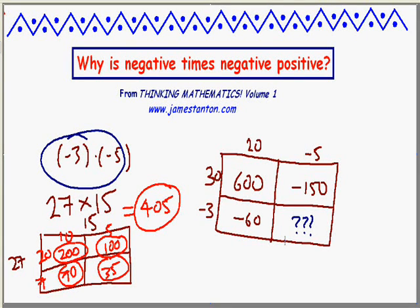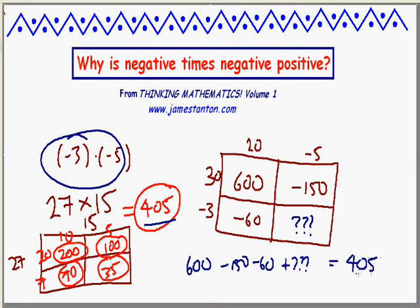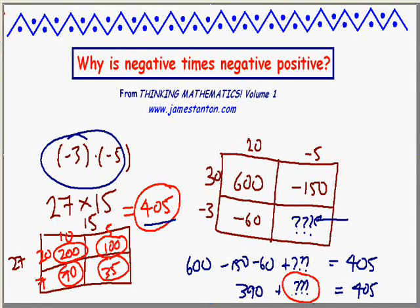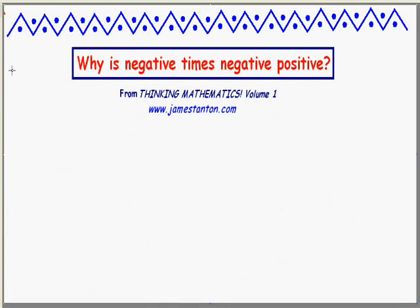I know we've been trained to say negative 15, but let's say I want the math to tell me what it should be. Right now, it's a mystery. Well, we know the answer to this problem has to be 405. So right now we have 600, we have negative 150, we have negative 60, and a mystery number — and we know the answer must be 405. Can the math tell us what this mystery answer must be? Yes. 600 minus 150 is 450; minus 60 is 390; plus something mysterious must equal 405. The math is telling me this mysterious object must be positive 15. I am forced to say that negative 3 times negative 5 is positive 15.